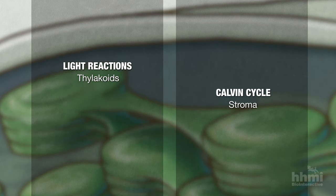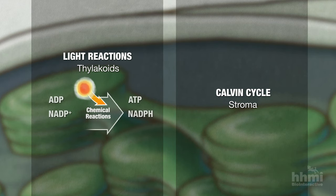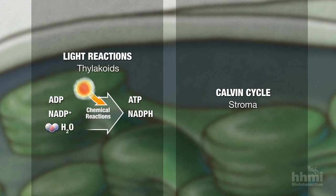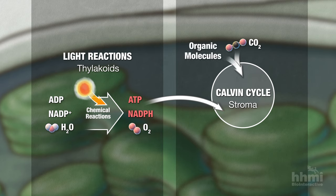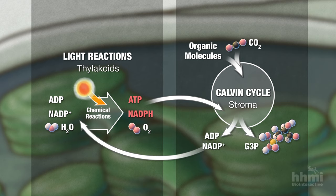In the thylakoid membranes, the light reactions transform light energy to chemical energy. Light energy drives the formation of ATP molecules from ADP, and of NADPH molecules from NADP+ and electrons. Along the way, water molecules are split and oxygen is formed, which can be released into the atmosphere. In the stroma, the Calvin cycle reactions use the chemical energy of ATP and NADPH to combine carbon dioxide from the air with organic molecules to form new molecules like the sugar G3P. ADP and NADP+ are recycled and may be used again in the light reactions. A plant increases its biomass through the formation of these new organic molecules.